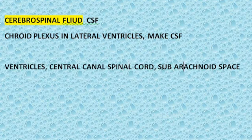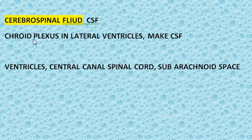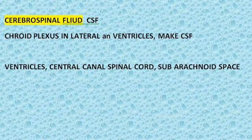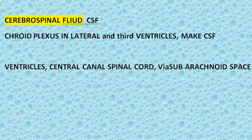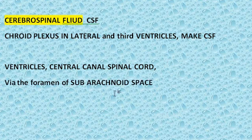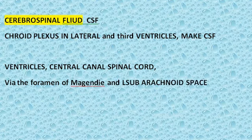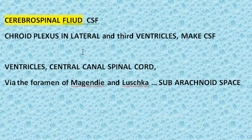The choroid plexus of the lateral and third ventricles form the CSF. It then flows into the ventricles, the central canal of the spinal cord, and via the foramina of Magendie and Luschka it reaches the subarachnoid space.